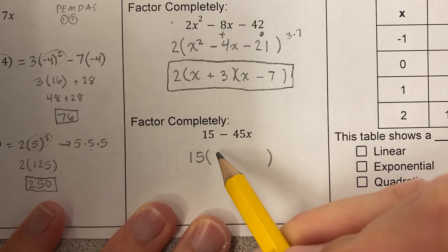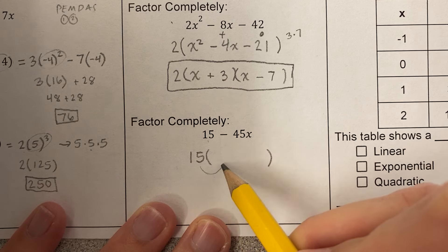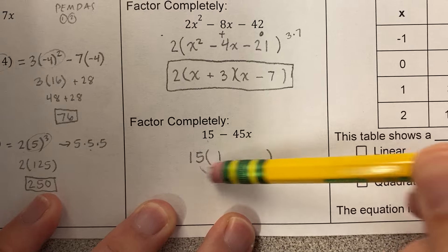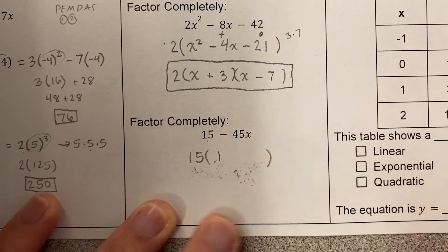15 times what is 15? Because now remember, I'm going to have two terms in here because when I multiply here and here, I want to get this term and this term. So 15 times 1 is 15.